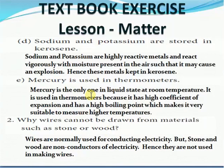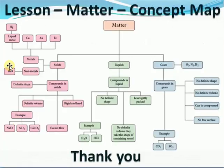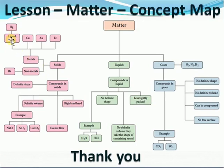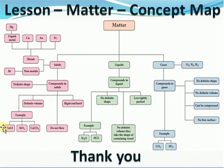Now let's go through a mind map of this lesson. Matter can be classified into solid, liquid, and gas. In solids we have elements — metals and non-metals. The only metal available in liquid state is mercury; other metals include copper, iron, and gold. The only non-metal available in liquid form is bromine; other non-metals include carbon, nitrogen, and oxygen. Compounds in solid state have a definite shape and definite volume — they are rigid and hard. Examples: sodium chloride, silicon dioxide, and calcium carbonate.